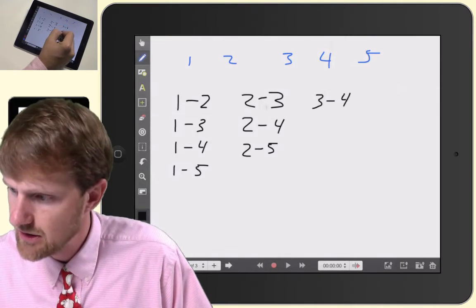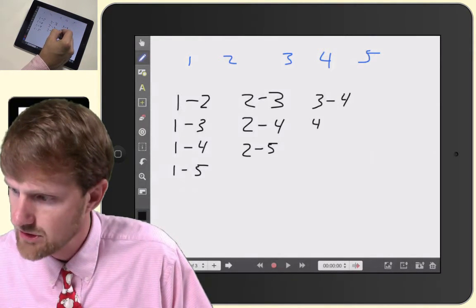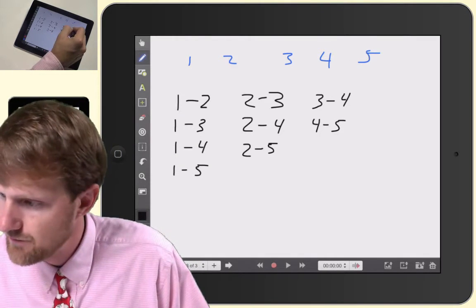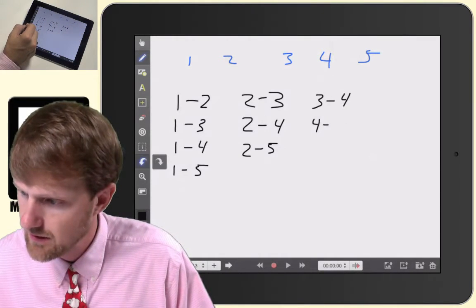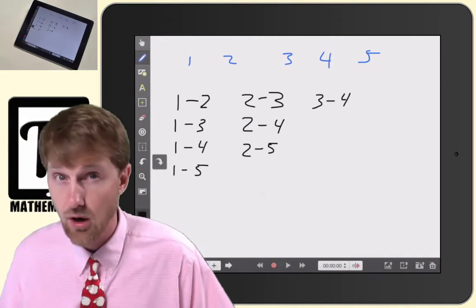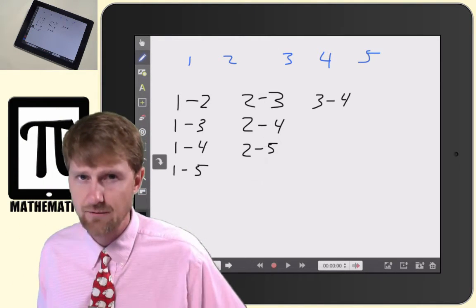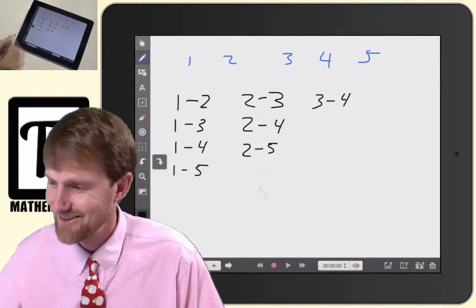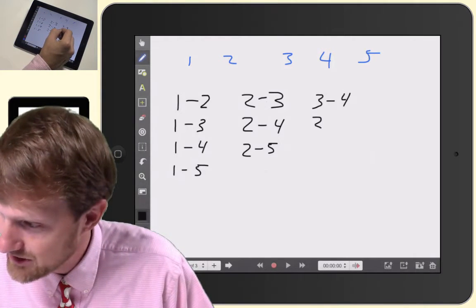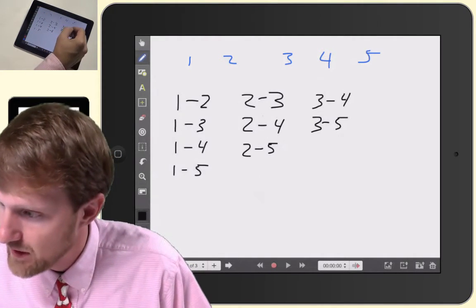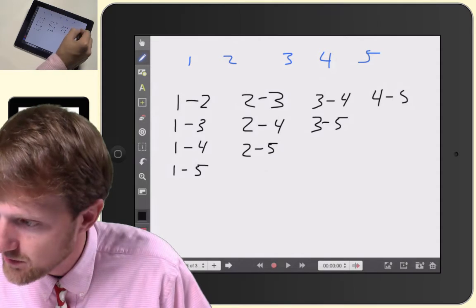Three's going to shake hands with four, four's going to shake hands with five. Now three's going to shake hands with five, and then now we do all four shake hands with five.